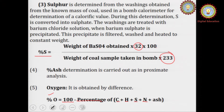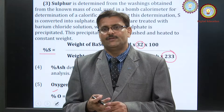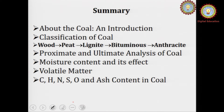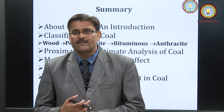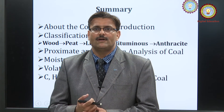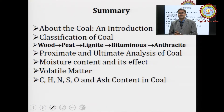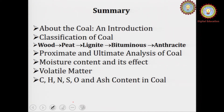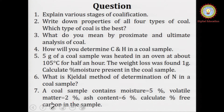In ultimate analysis, the exact composition of coal is estimated by calculation of carbon, oxygen, hydrogen, sulfur, and nitrogen. To summarize, we studied the formation of coal and its various stages — peat, lignite, bituminous, and anthracite. In proximate analysis of coal, moisture content, volatile matter content, and free carbon are calculated. In ultimate analysis, we calculate the percentage of carbon, hydrogen, oxygen, sulfur, and nitrogen, and we estimate the rank of coal.